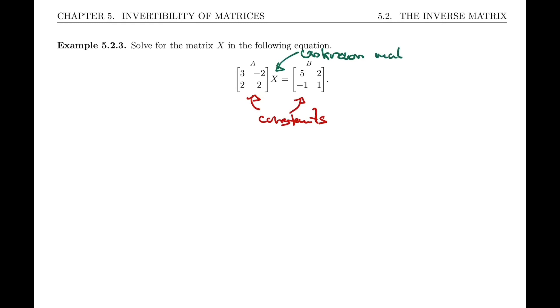The first step is finding out whether A is invertible. Does the matrix A have an inverse? We check that by using ad minus bc. In this case, 3 times 2 minus negative 2 times 2, so 6 plus 4 equals 10. That of course is not zero and therefore A is invertible.